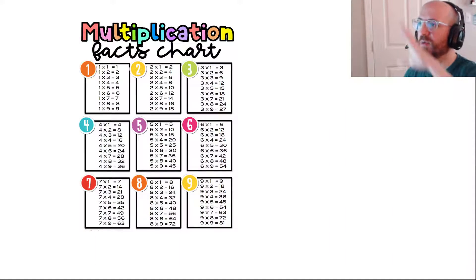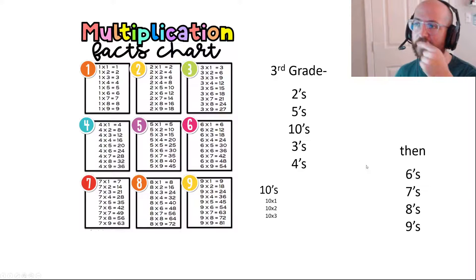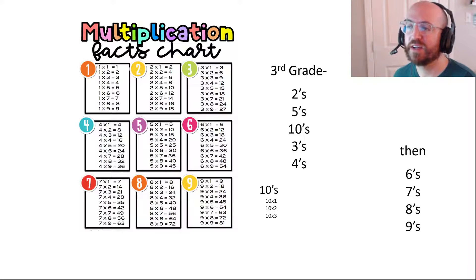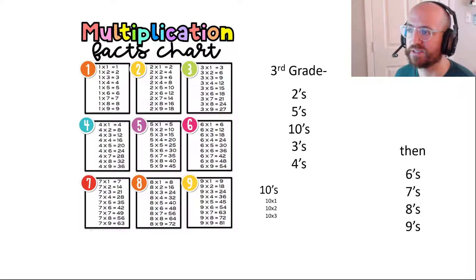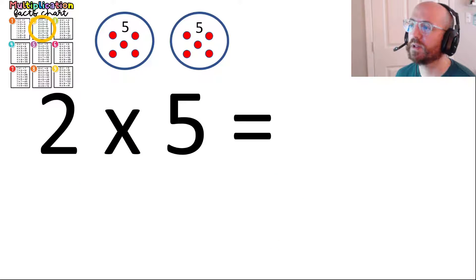We have all of the multiplication facts over here - the twos through nines. In third grade it's important for you to know really quickly the twos, fives, tens, and then the threes and fours. Then when you know all those, you try your times six, seven, eight, and nine. Hopefully in third grade you can know all of these - twos, fives, threes, and fours - and if you want to get ahead, knowing your sixes, sevens, eights, and nines would be awesome too.